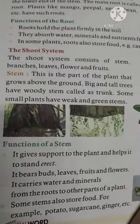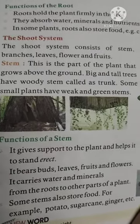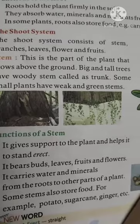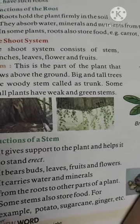Some plants have a weak and green stem. The stem helps support the plant and causes it to grow upright. Through the roots, water comes into the stems and travels to different parts like leaves, fruits, and other areas. Some stems also store food, like potatoes, sugarcane, and ginger. Sugarcane, which you may have seen, is also a stem that contains food.